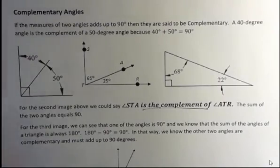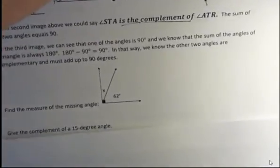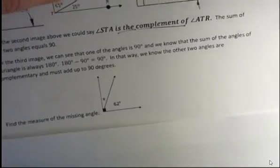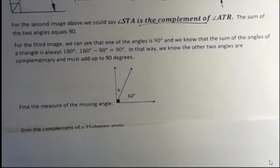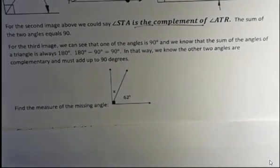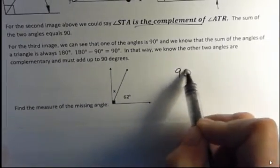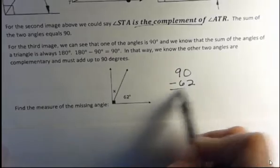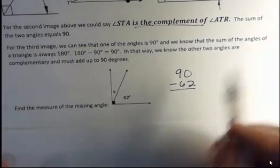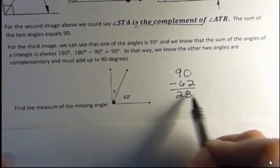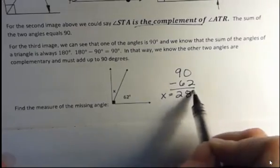All right, what if you were given something like this and asked to find a missing angle? Well, you can see in this case, they put the little box in the vertex so we know that we're dealing with a right angle. So all we have to do is say, well, we know that that's 90. We subtract the 62 that we're given and we get 28. So x has to be 28 degrees.